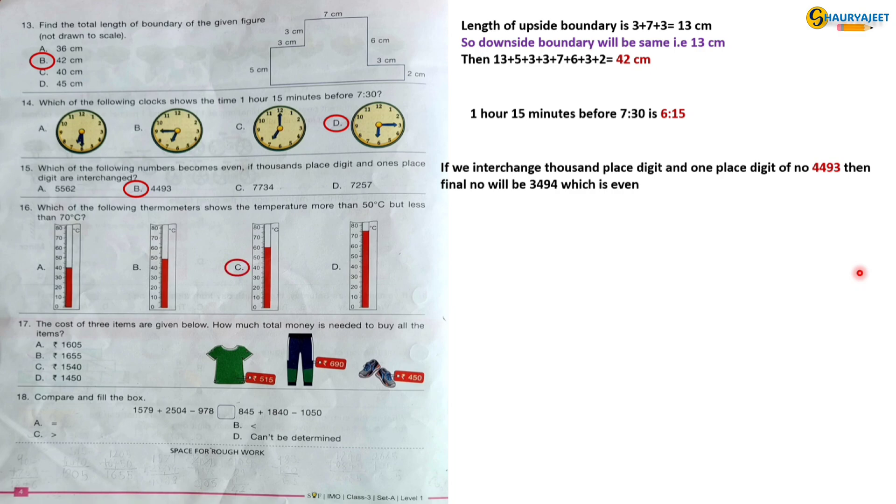Question 16: Which of the following thermometers shows the temperature more than 50 degrees Celsius but less than 70 degrees Celsius? 60 degrees Celsius is more than 50 degrees Celsius but less than 70 degrees Celsius. So the correct option is option C.